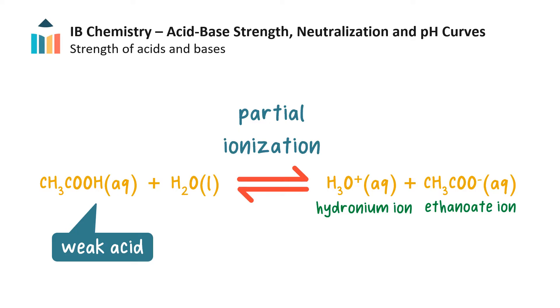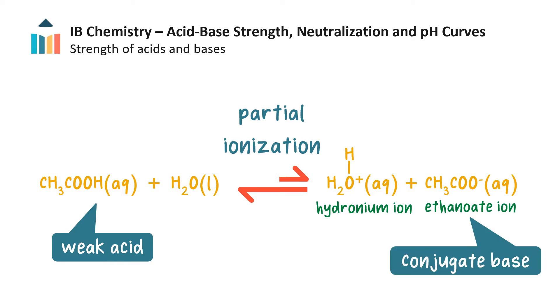Weak acids, such as ethanoic acid, ionize in water only partially, forming an equilibrium with their ions. The equilibrium lies to the left, meaning that in solution it is primarily the unionized form that exists. The conjugate base of a weak acid, in this case the ethanoate ion, readily accepts a proton from the hydronium ion to reform the acid. And so, weak acids are poor proton donors.